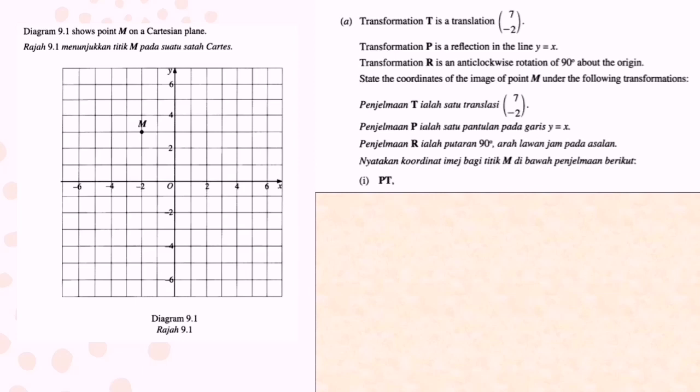Okay so we must do the translation first followed by reflection. For translation 7 negative 2, you know if go to left hand side is negative, go to right hand side positive. For the number below, go up positive, go down negative. So from here we can make conclusion: translation 7 negative 2 means that 7 steps go to right hand side and negative 2 is go downward 2 steps. The point is 5, 1.